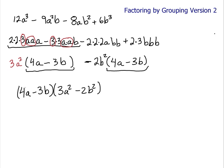But, let's double check the math to see if it's right. 4A times 3A square is going to give me 12A cubed. And, 4A times negative 2B square is going to give me negative 8AB square. And, negative 3 times 3A square is going to give me negative 9A square B.